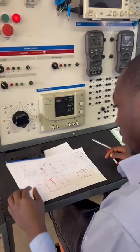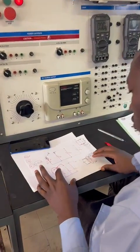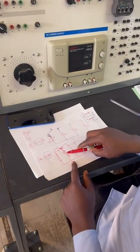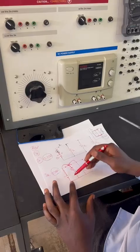For now, we want to measure the current flowing through R1. What we do is place our ammeter in line with R1. So what we're going to do is this.